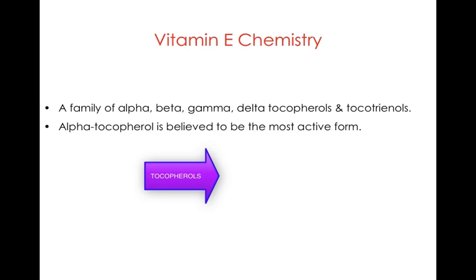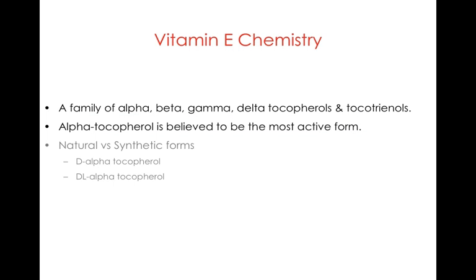Vitamin E are known as the tocopherols — a family of alpha, beta, gamma, delta tocopherols and also tocotrienols. The active form of vitamin E is believed to be alpha tocopherol. In the case of vitamin E, there is a difference between natural and synthetic forms: D alpha tocopherol versus DL alpha tocopherol. The DL alpha tocopherol is only 50% as active as the D alpha form.